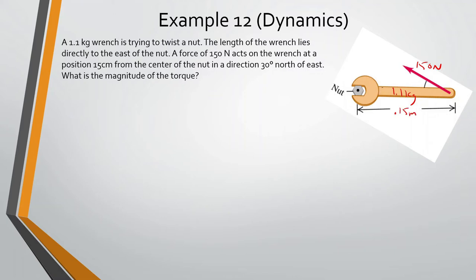In a direction 30 degrees north of west — it says north of east in the problem but north of west gives the same answer. What is the magnitude of the torque? The equation for torque is: torque equals force times radius times sine of theta.